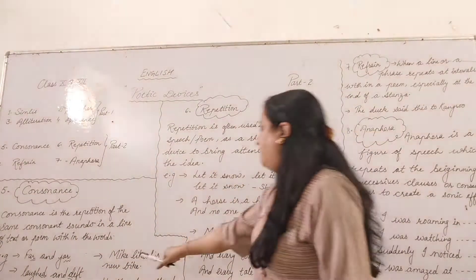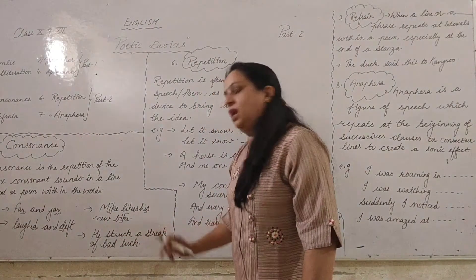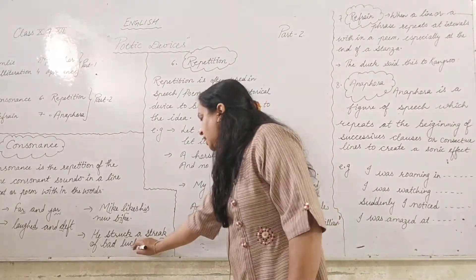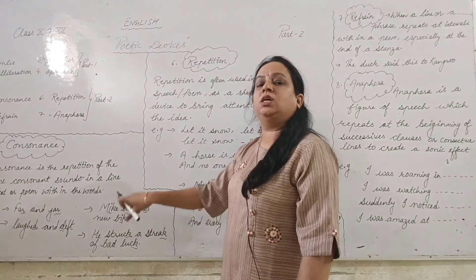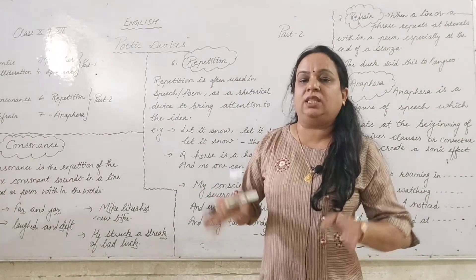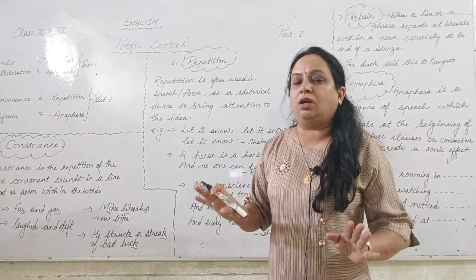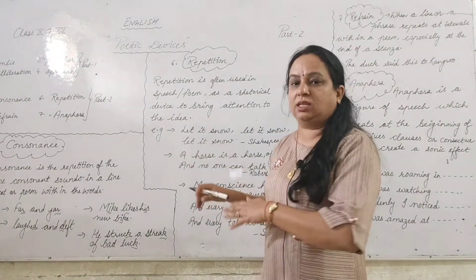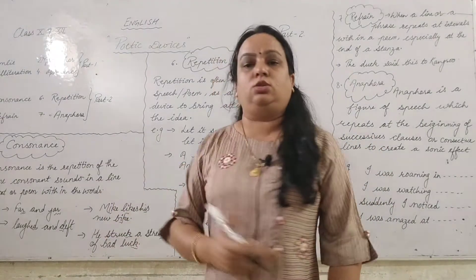The last example of consonance is: 'He struck a streak of bad luck.' Here, the 'K' sound is repeated in 'struck,' 'streak,' and 'luck.' This consonant alphabet K is being repeated within the words. It is not necessary that it should be at the start of the words — it may be at the beginning, middle, or end, but that consonant sound should appear within the words. That is consonance.